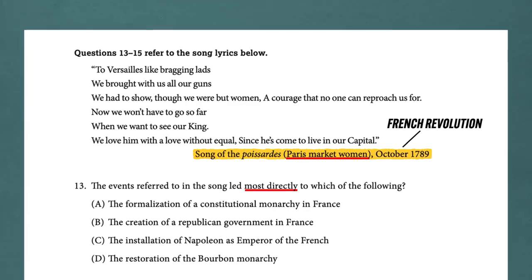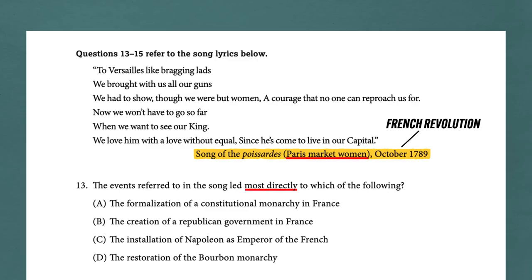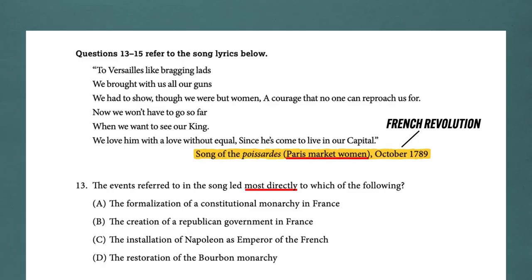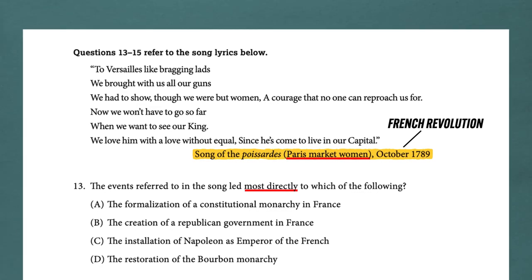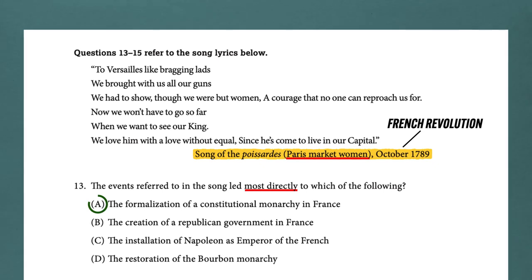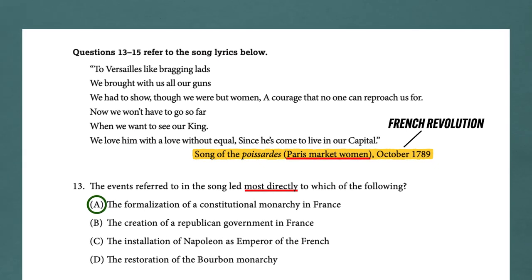Let's start from the bottom and go up. D: Restoration of the Bourbon Monarchy — that's post-Napoleon. C: The installation of Napoleon as Emperor of the French — now we're moving backwards in time. B: The creation of a Republican government in France. If you look at B, C, and D in that order, you have a series of events that happen chronologically after one another. And then A: The formalization of a constitutional monarchy in France. This happened before the establishment of a Republican government, so you have a chronological series starting with A and going to D. The answer is A — the one that happens closest in time to the actual events in the stimulus.